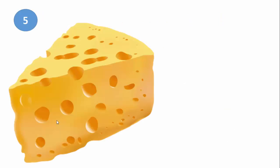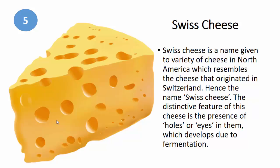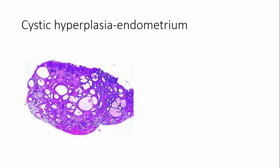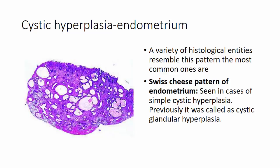The fifth one is Swiss cheese. Swiss cheese is named for the cheese that originated in Switzerland, with its distinctive holes — referred to as eyes — which develop due to fermentation. In pathology, this Swiss cheese appearance is found in cystic hyperplasia of the endometrium, where the endometrial glands are of variable sizes showing variable degrees of dilatation, thus resembling Swiss cheese. It was also previously referred to as cystic glandular hyperplasia.